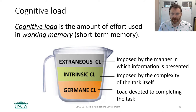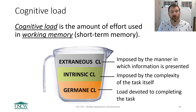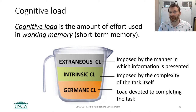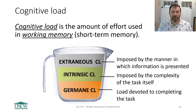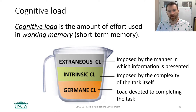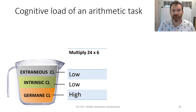Intrinsic cognitive load is imposed by the complexity of the task itself. Some things are just harder to do than others — it's easy to walk and chew gum, it's hard to do differential equations. Germane cognitive load is the processing power that an individual has to devote to solving a problem. Let's illustrate what these things mean through an example.